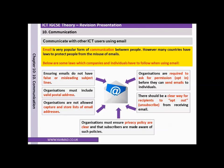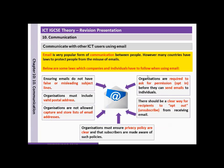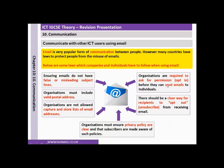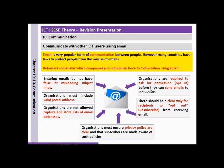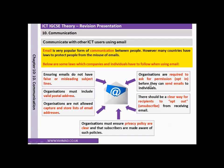So let's say you've subscribed and you want to opt out — it should be very clear, very obvious. Organisations are required to ask for permission to opt in before they can send emails to individuals. So basically if you want to subscribe for a newsletter, it should be a clear option to tick or not to tick if you want to receive the letters or not.